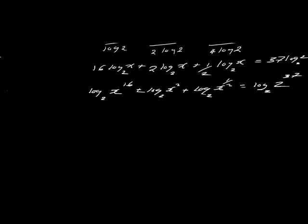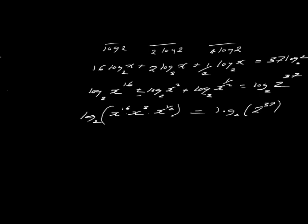Now we can simplify further both sides of the equation by removing log to base 2. If we factorize out log to base 2 on the left-hand side, from the laws of logarithms, where there is addition it becomes multiplication. So we have x raised to power 16 times x raised to power 2 times x raised to power half. That equals log to base 2 of 2 raised to power 37. At that point we can ignore the logs on both sides of the equation.